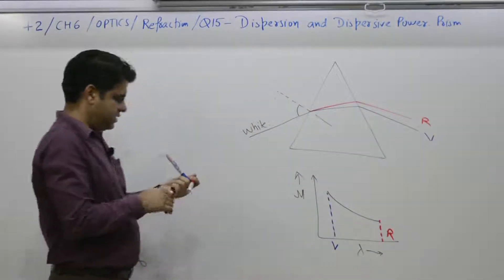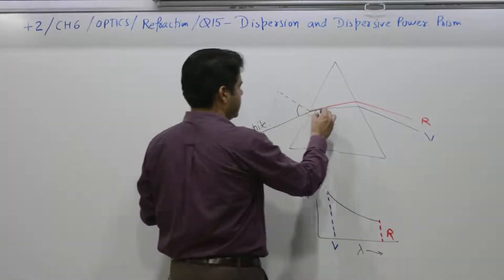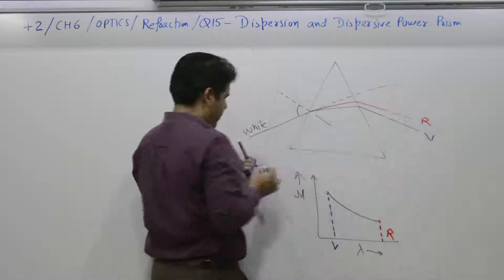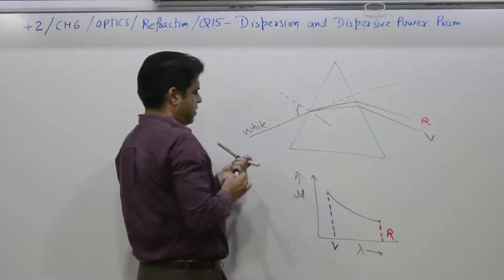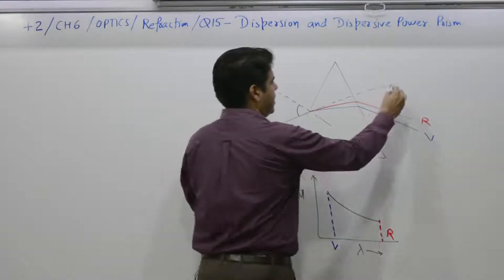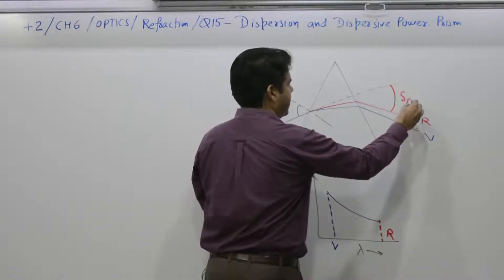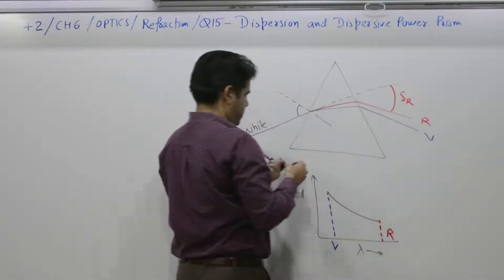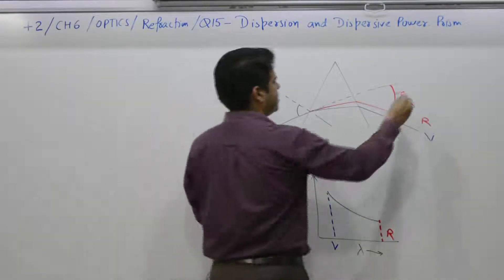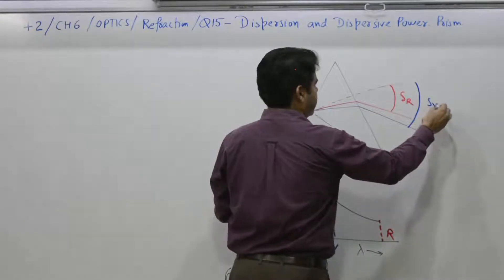When we say deviation, this is the ray moving straight. This is the deviation suffered by red color, and this is the deviation suffered by violet color.